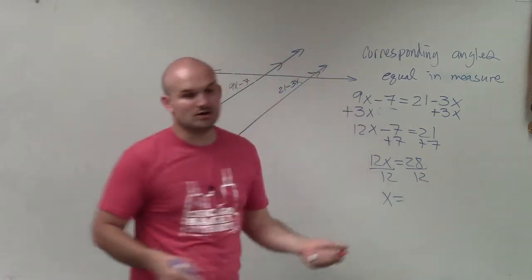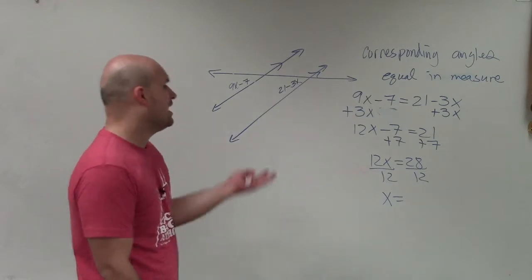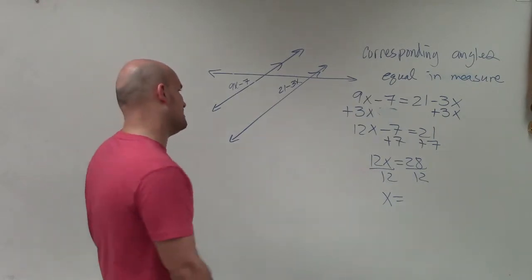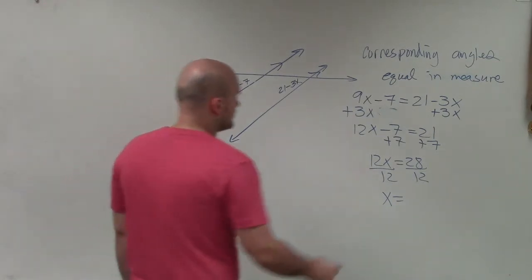Now, 12 does not divide evenly into 28. However, I can simplify that by saying the largest number would be 4, which would be 7 thirds.